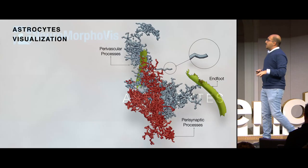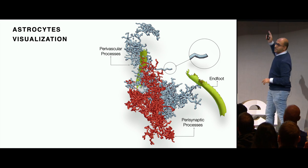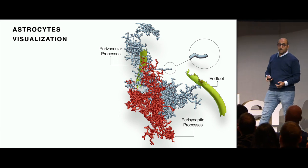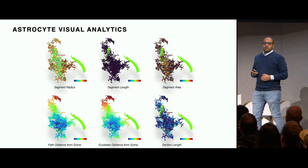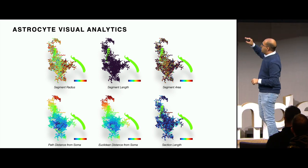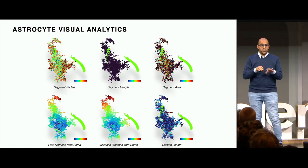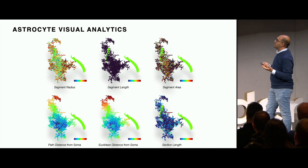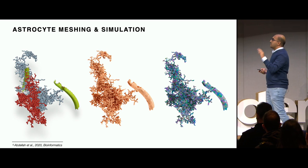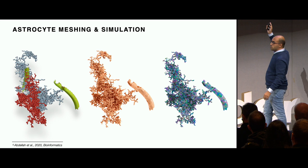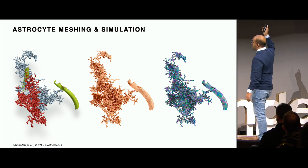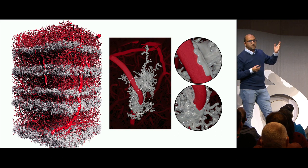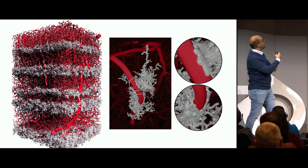Astrocytes are similar to neurons except they have something called endfeet - the object that wraps around blood vessels to transfer energy from the blood vessels to the neurons. We've integrated several visual analytics tools so we can use flat shaders and apply different visualization kernels to analyze them within Blender, getting different kinds of information neuroscientists need. We also implemented the same meshing techniques, including watertight ones, to perform reaction-diffusion simulations and validate how astrocytes wrap around blood vessels.